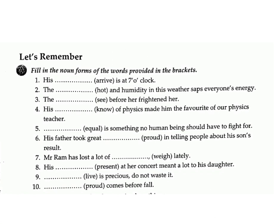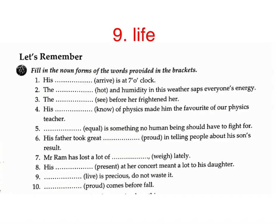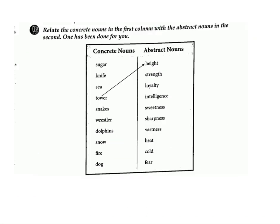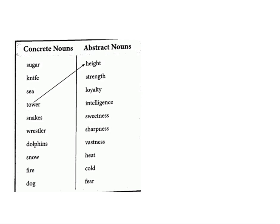7. Mr. Ram has lost a lot of ___ (way) lately — answer: weight. 8. His ___ (present) at her concert meant a lot to his daughter — answer: presence. 9. ___ (live) is precious, do not waste it — answer: life. 10. ___ (proud) comes before a fall — answer: pride. B. Relate the concrete nouns in the first column with the abstract nouns in the second — one has been done for you.